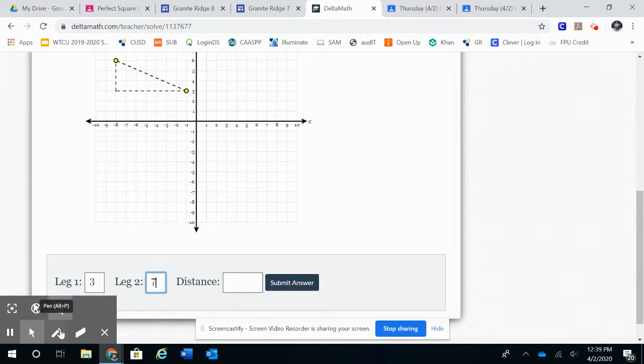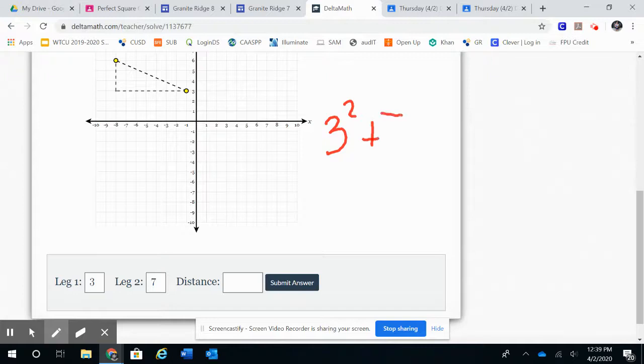From there I have to use the Pythagorean theorem to find my distance of the hypotenuse. So if I have my first leg, three squared, plus my second leg, which is seven squared, is going to equal c squared.